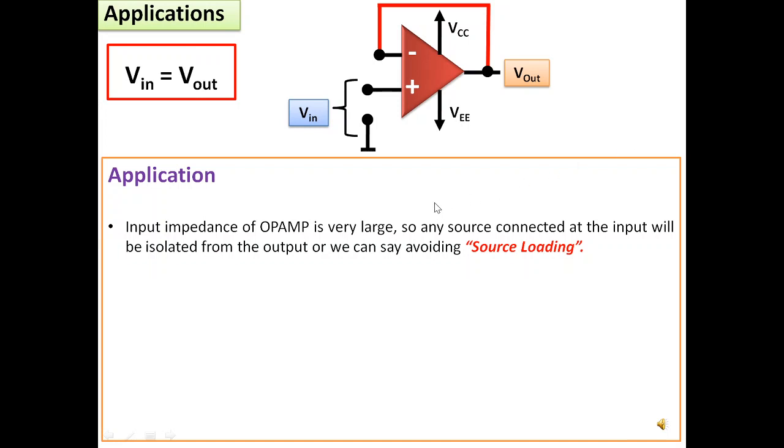The input impedance of operational amplifiers is usually very large. So any source connected at the input will be isolated from the output or we can say that we are avoiding source loading. The impedance matching or buffer can be used to connect a high impedance source to a low impedance load.